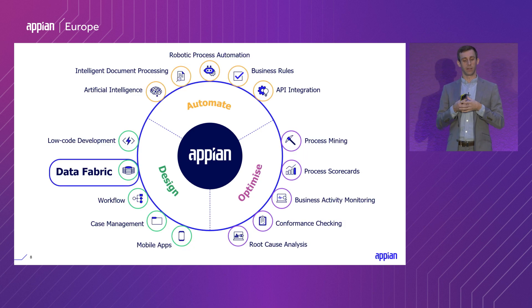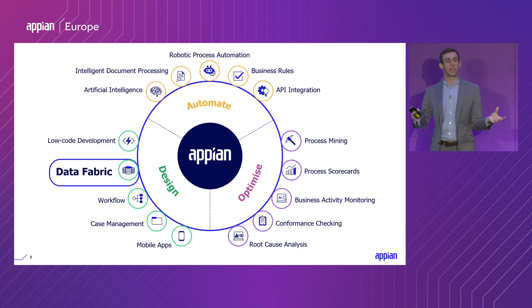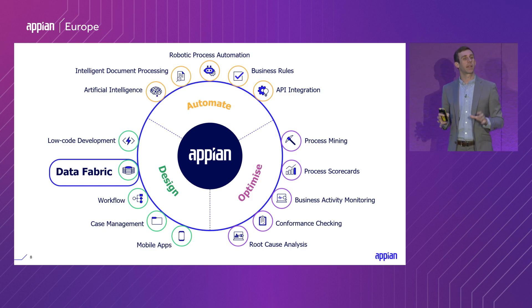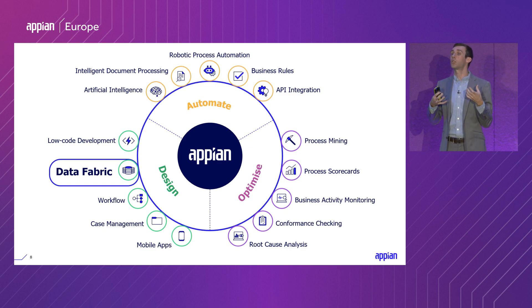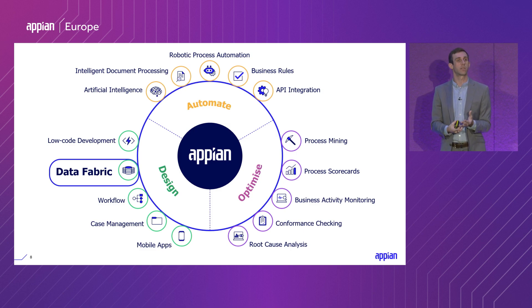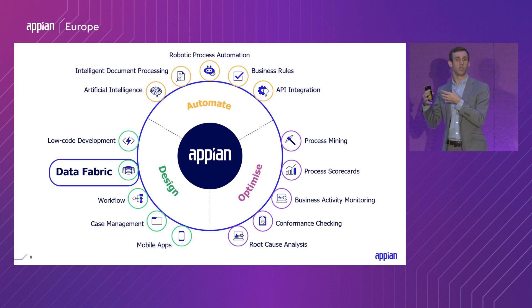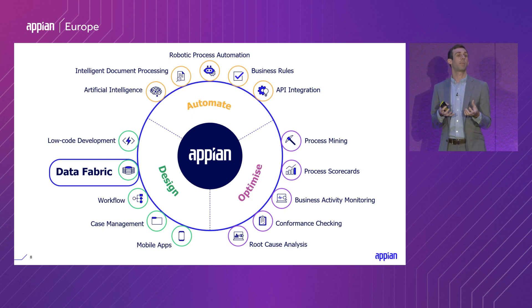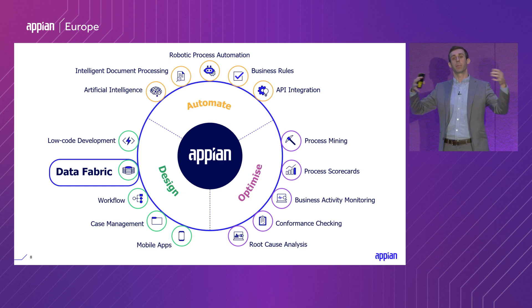Appian has a number of different features that represent different aspects of our platform. I think of data as a foundational part of this, because regardless of what you're doing — whether you're creating automations through RPA or intelligent document processing, using process mining, or using other design objects — by establishing your data fabric up front, it makes it a lot easier to then build your application around it.